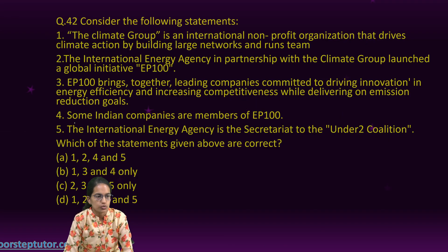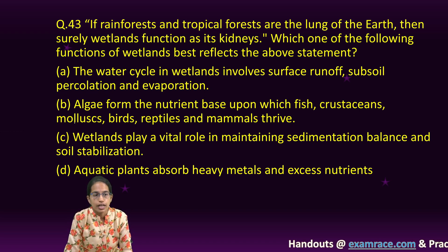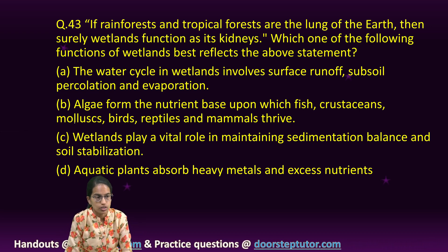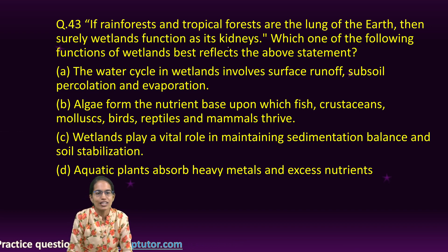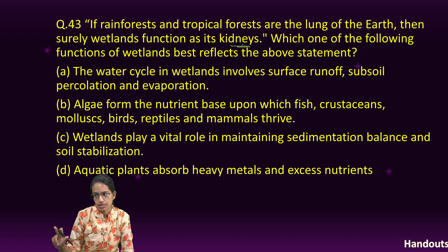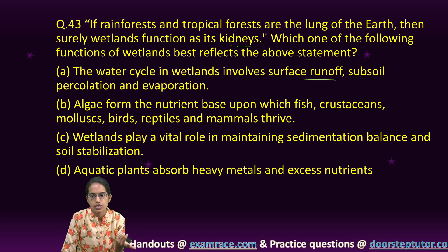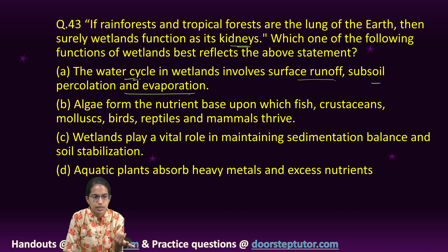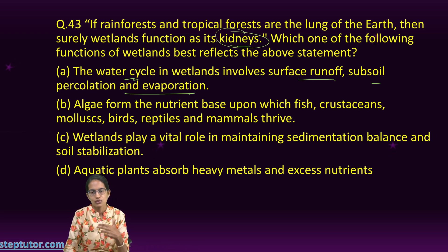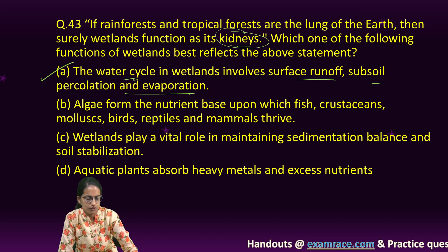Rainforests and tropical forests are called the 'lungs of the Earth' because they absorb carbon dioxide. Wetlands are called the 'kidneys of the Earth' because they function in waste recycling and are a primary source of fresh water. Wetlands are involved in surface runoff, subsoil percolation, and evaporation, playing an important role in maintaining the water balance — just as kidneys maintain water balance in the body. Option A is correct.